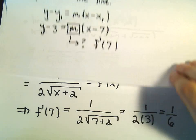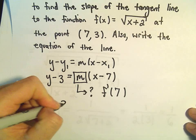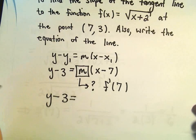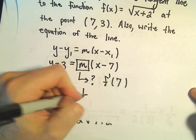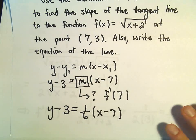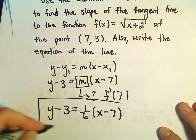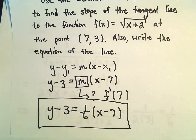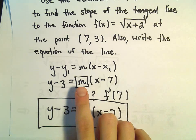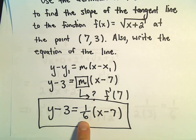Now we plug the slope back into our formula. The equation of the tangent line is y minus 3 equals 1/6 times x minus 7. You could multiply this out and put it in slope-intercept form, but we'll leave it here. The only real work in these problems is finding the derivative and then computing the particular slope you're interested in.